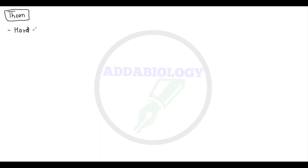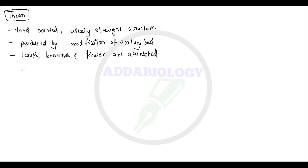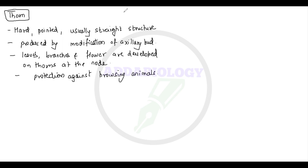After tendrils, we have thorns. If a stem modifies into thorns, it is for two reasons: one is to avoid the loss of water by transpiration, and the second is to protect the plant from browsing animals. Thorns are hard, pointed, usually straight structures produced by modification of the axillary bud. Leaves, branches, and flowers develop on the thorn at the node. The common example is Citrus.